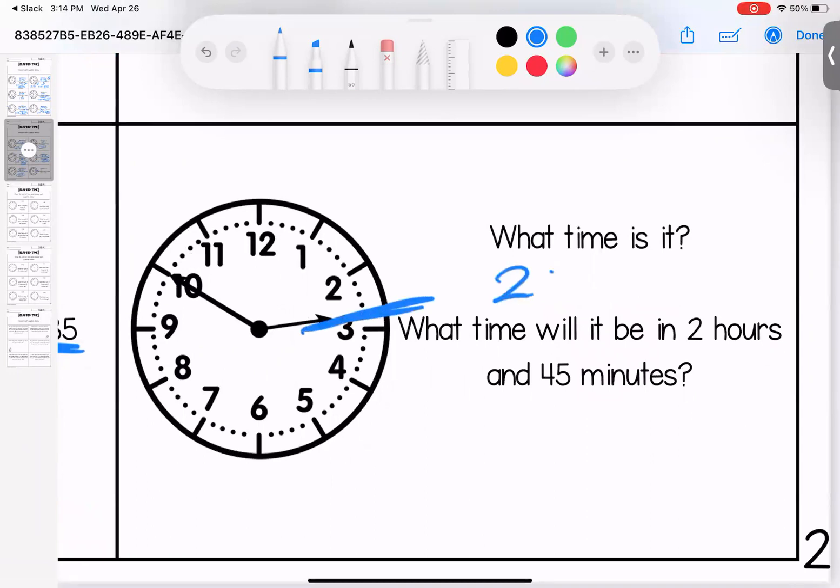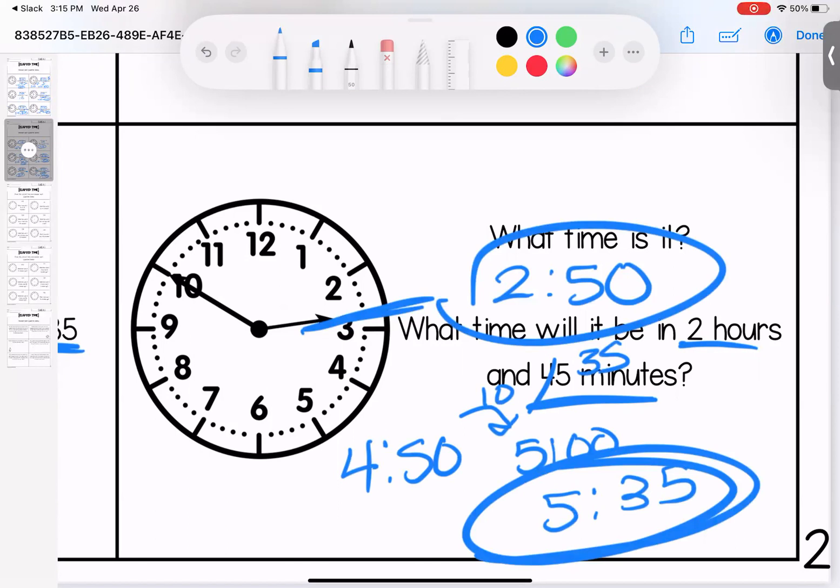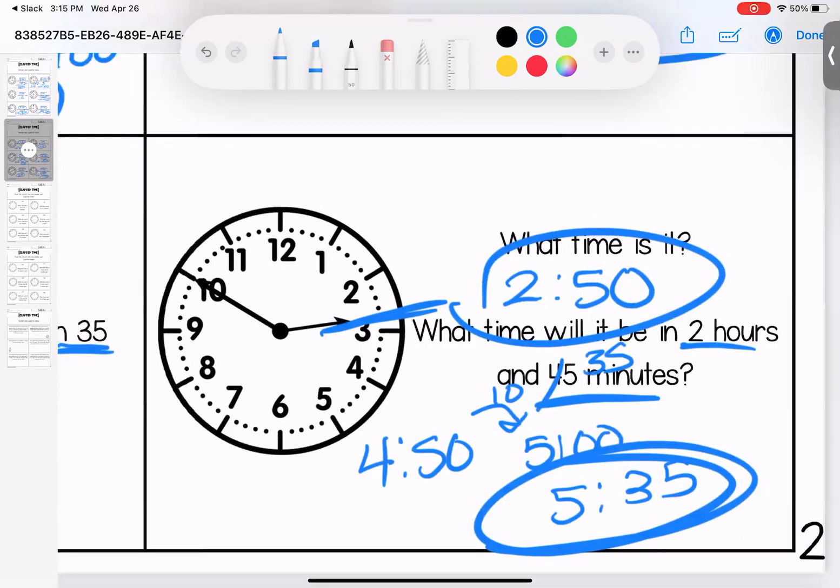Last one on this page, what time is it? It's 2:50. What time will it be in two hours and 45 minutes? Two hours will be 4:50. If I add 10 minutes, that's 5 o'clock, and then I would need 35 more minutes, 5:35. Questions on these? Bring them with you to class.